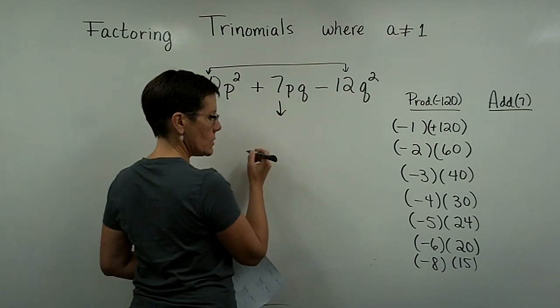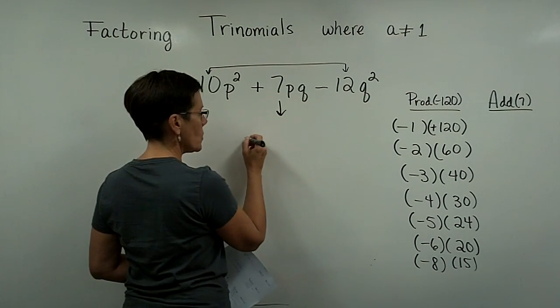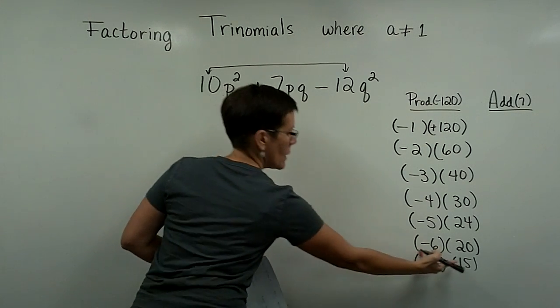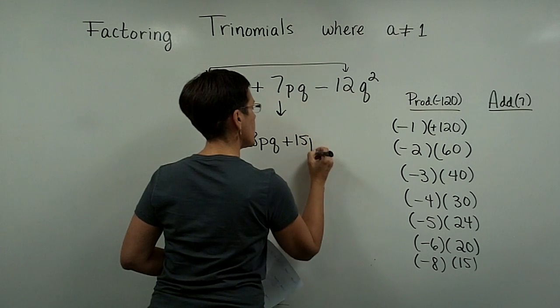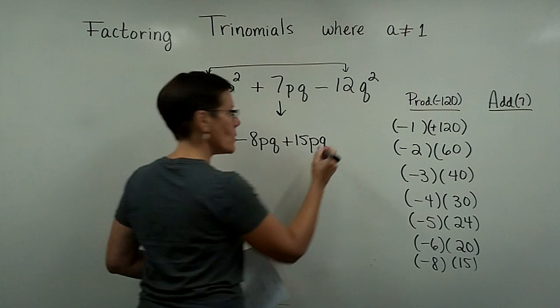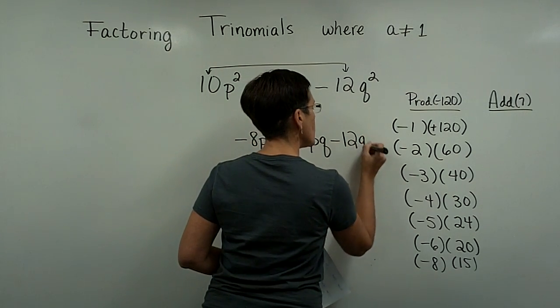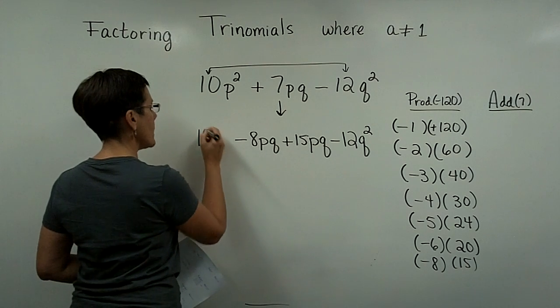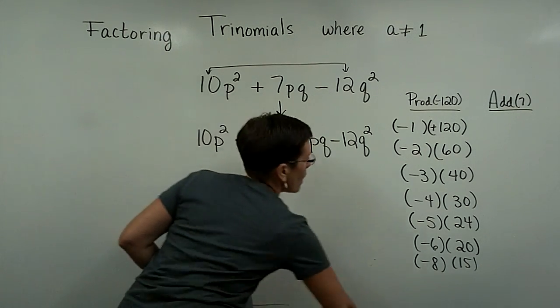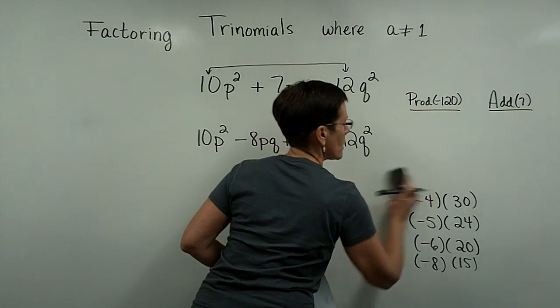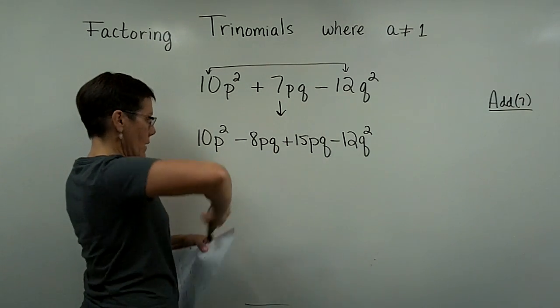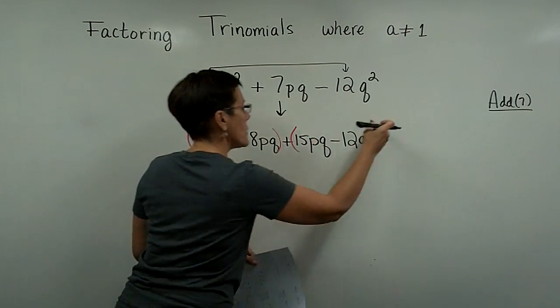So I'm going to replace this middle term, the positive 7pq, with a minus 8pq and a positive 15pq. That adds to be 7pq. So this method still works. I'm going to bring down the 12q squared and bring down the 10p squared. Just so that we don't have to look at this while we're working, I'm going to go ahead and get rid of this. Hopefully you've got it written down, or you can go back on the video.